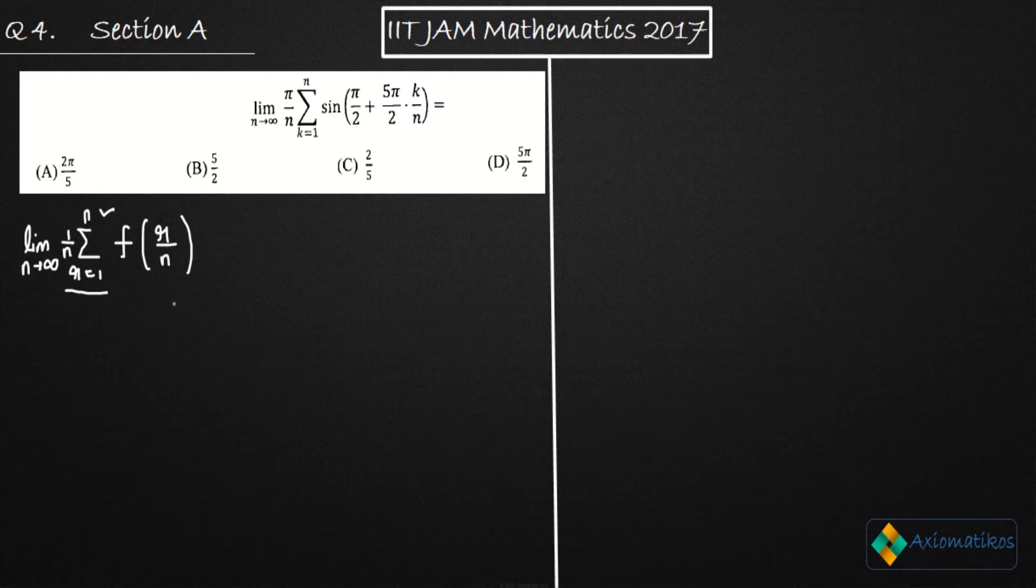If you have this kind of limit, then what happens actually, this 1 by N is replaced by dx. This is the definition of the integral. So what we do in such kind of cases, we replace 1 by N with dx.